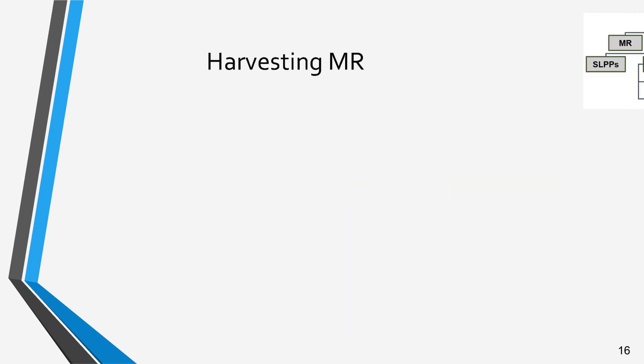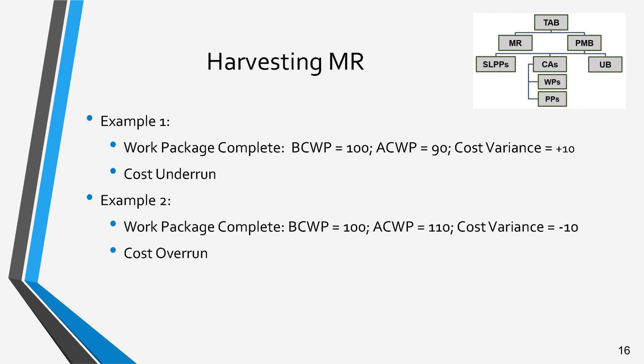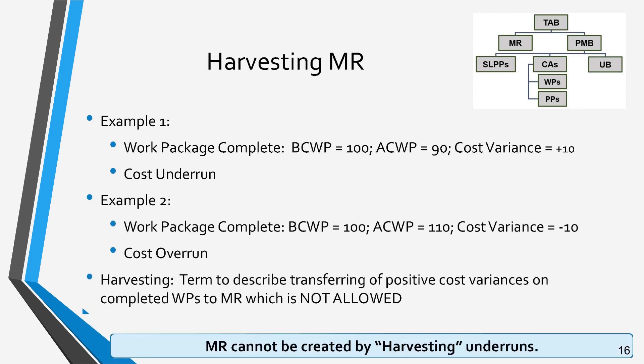We discussed earlier that MR cannot be used to offset accumulated variances — overruns or underruns. In the first example, we see a completed work package with a cost variance of plus 10, which is a positive variance, meaning that the work package had a cost underrun. Should a work package complete with a negative cost variance, like the second example, then it is reported as a cost overrun. EVMS does not allow transferring positive variances from completed work packages to MR for any use. That is referred to as harvesting. Cost metrics are reported as-is.